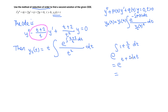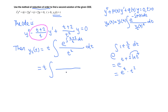Separating the two parts, we get e^t times e^(ln t²). Since e and natural log cancel when adjacent, e^(ln t²) = t². So the expression on the top of the integral becomes e^t times t².